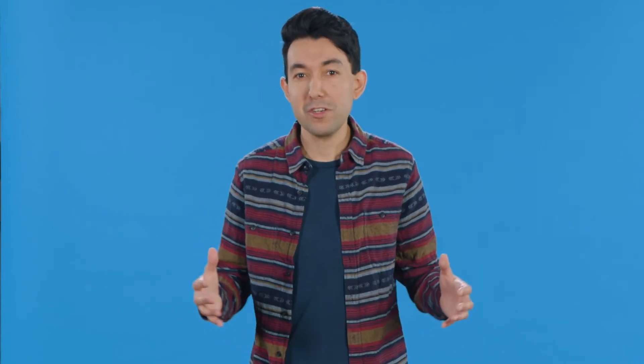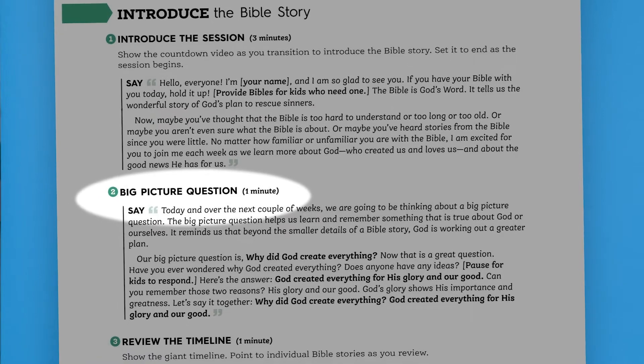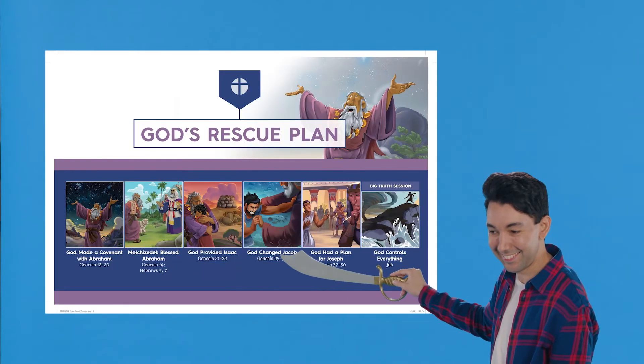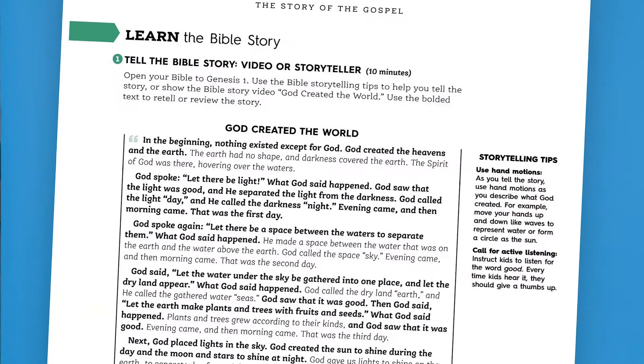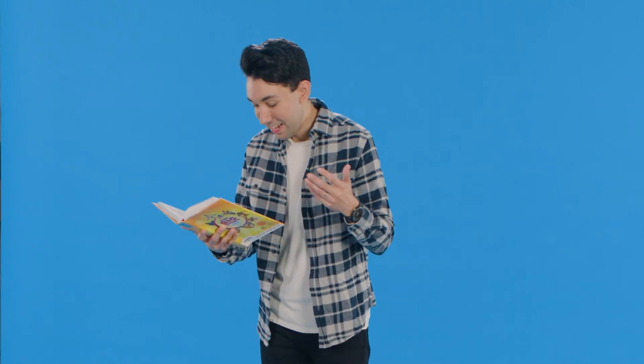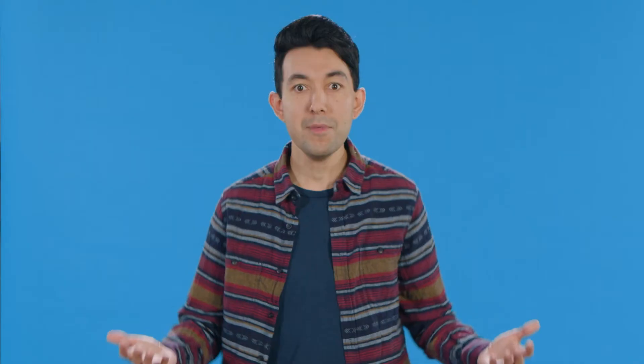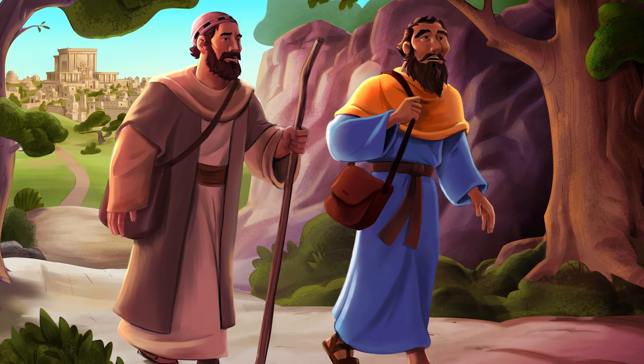Learn is the next part of the session content. During this time, leaders will share the Bible story and help kids understand what it actually means. First, leaders will review the unit's big picture question and answer, which is one of the ways that kids learn important doctrines of the faith. Next, leaders can use either the giant timeline or the small group timeline to help kids see where that day's Bible story fits into the bigger story of scripture. Then, leaders have a few options in sharing the Bible story: they can read the story straight from the leader guide, tell the story in their own words using the storytelling tips provided, show the Bible story video, or use a combination of these techniques. A Bible story teaching picture is also provided for the leaders to use during this time.